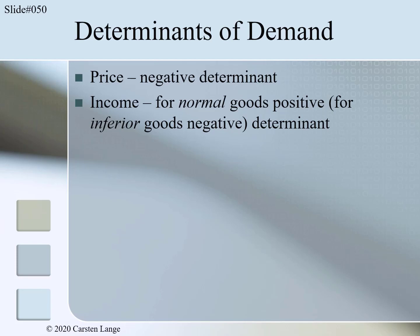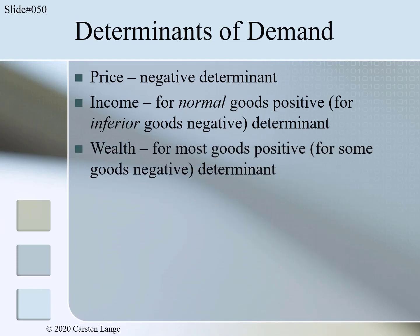A similar effect to the income effect is the wealth effect. For most goods the effect is positive; for some goods it is negative. Usually wealthy people consume more, but some markets suffer when consumers become more wealthy. For example, the demand for cheap wine would go down if people become more wealthy because they can afford nicer wines.